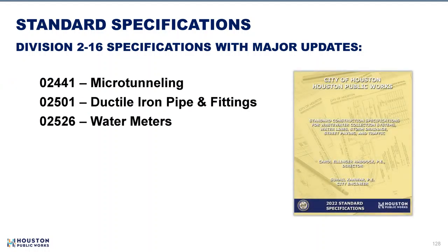Here is a list of some Division 2 to 16 changes with major updates. Specification 2441 micro-tunneling will be presented by Marcus Mangesha. Specification 2501 was revised to show that double-wrap encasement is required in open-cut method for water lines. Specification 2526 water meters was revised to be consistent with the dimensions given in IDM for 8-inch and larger water meter easements. There are still more changes in Division 2 to 16 specifications — check the red lines for those changes.